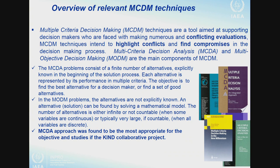In the first case, MCDA — multi-criteria decision analysis — problems consist of a finite number of alternatives explicitly known at the beginning of the process. Each alternative is represented by its performance indicators or criteria, and the objective is to find the best alternative or a set of good alternatives. Contrary, in MODM — multi-objective decision making — the alternatives are not explicitly known; a solution can be found by solving a mathematical model and the number of alternatives is not countable. For the KIND project, the MCDA approach was found to be the most appropriate.